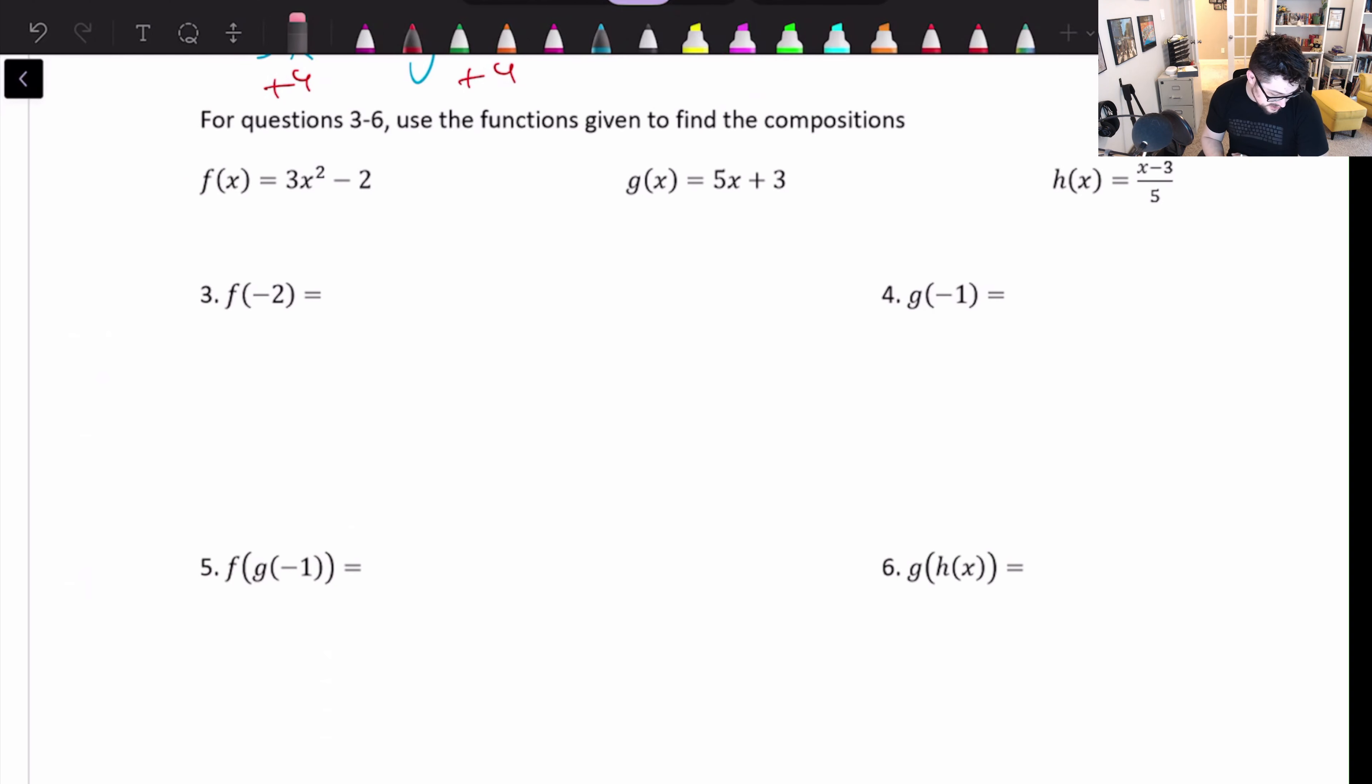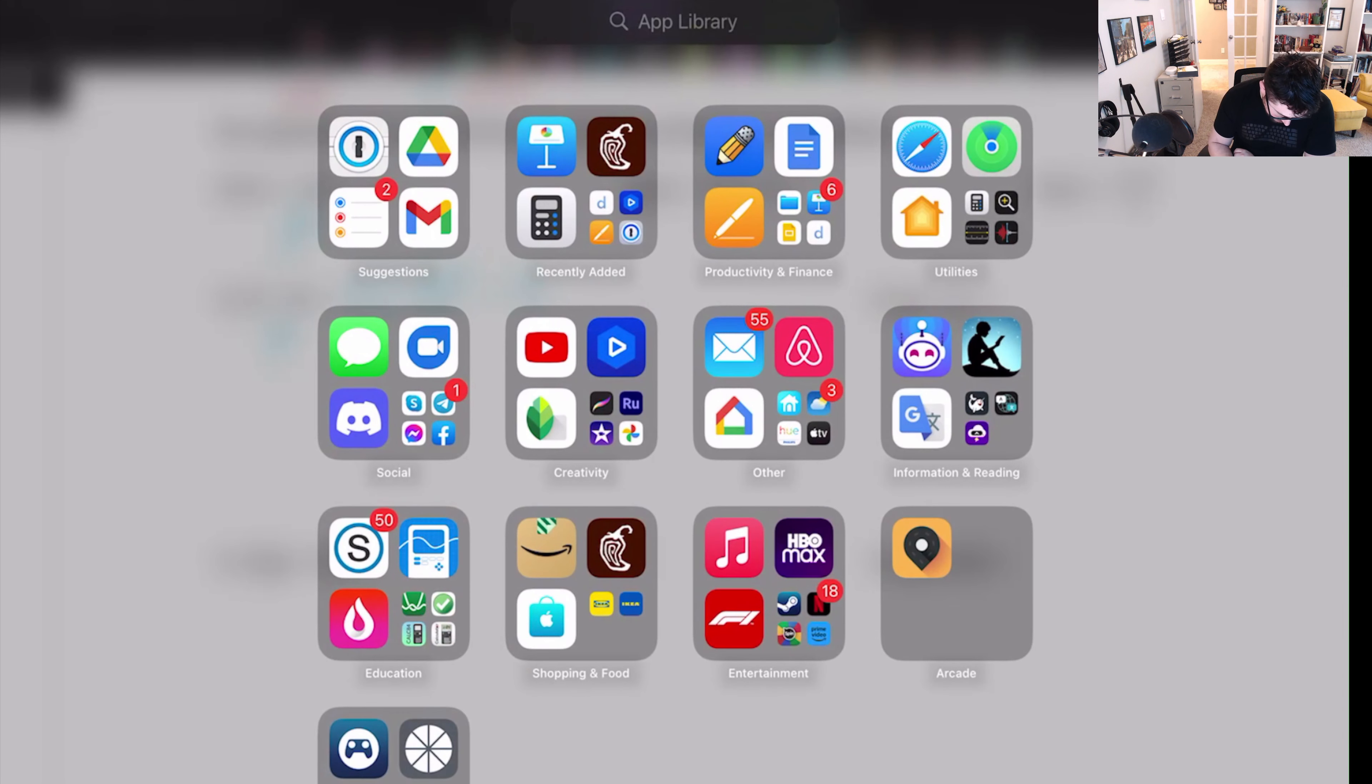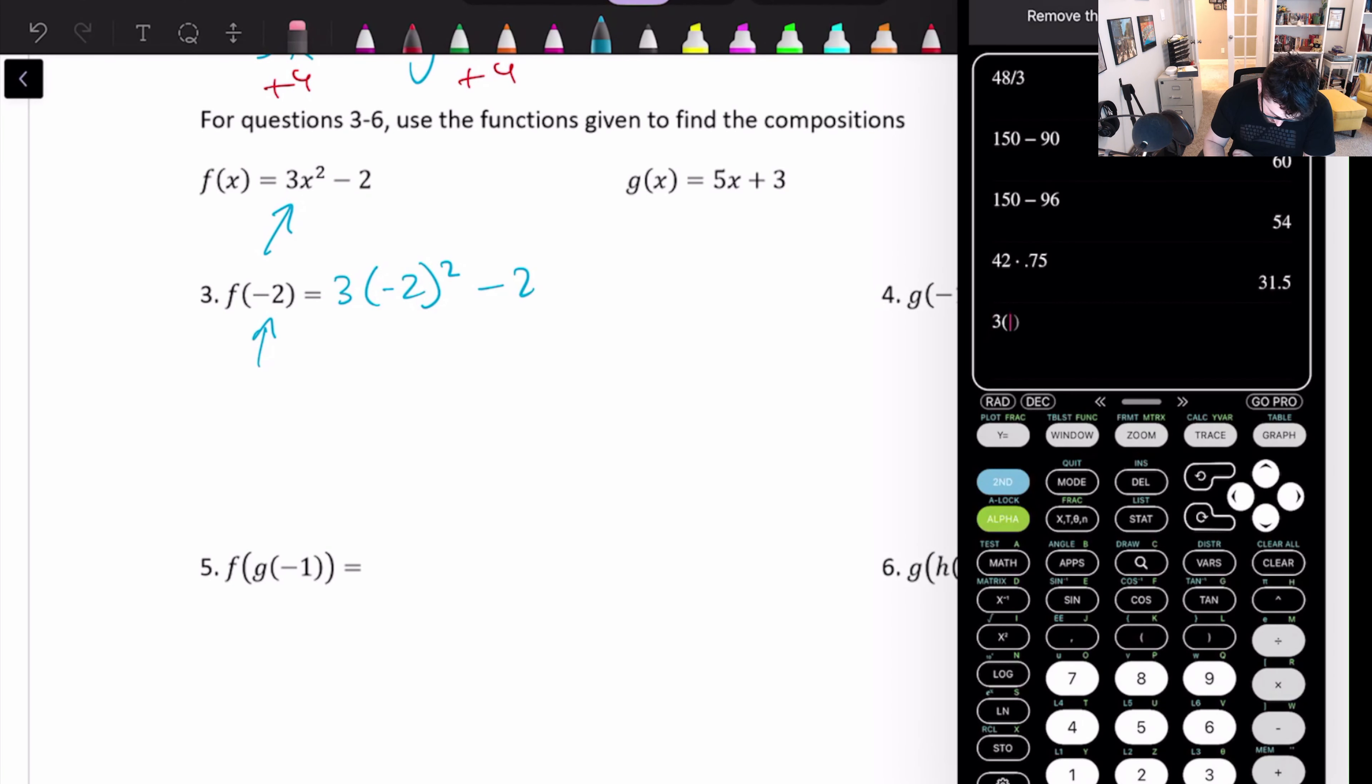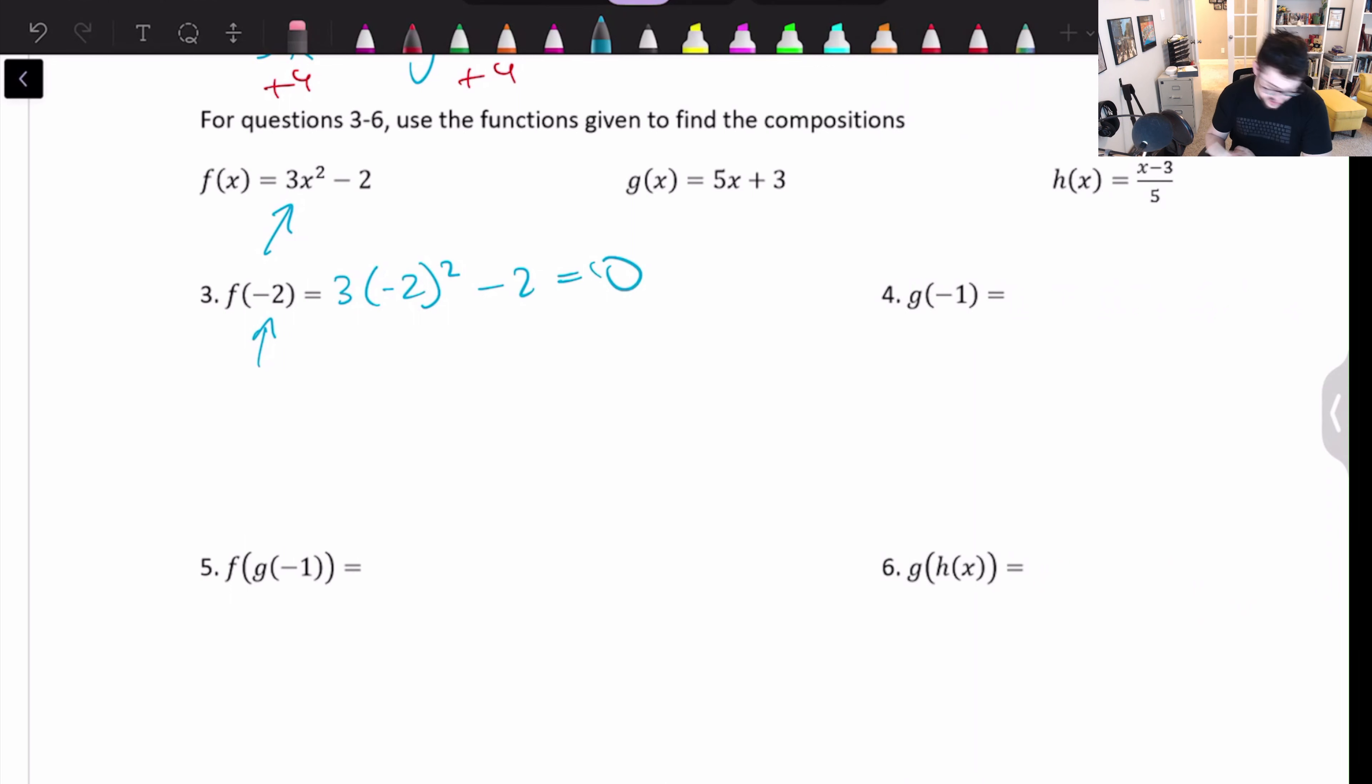Now, the next set of questions, questions 3 through 6, are asking you to use the function to find the composition or to evaluate the functions. So the first two problems, f of negative 2, g of negative 1, are just saying take the number on the inside. So in the first one, it's negative 2, and plug it into the function, which is here. So instead of 3x squared minus 2, we'll have 3 times negative 2 squared minus 2. And if I do that, I plug that into my calculator. Let's grab a calculator real quick. I see something under here that would work. All right. So I'd have 3 times negative 2 squared minus 2. And we get 10.